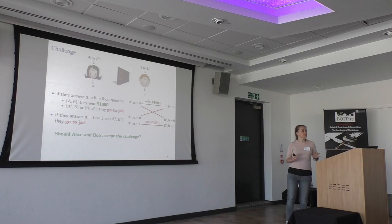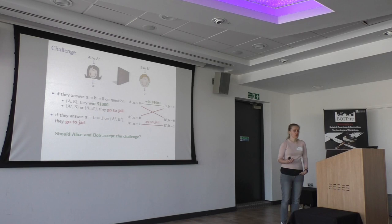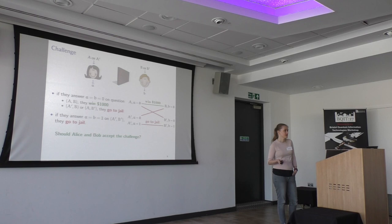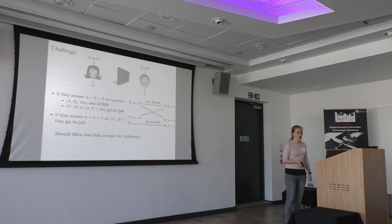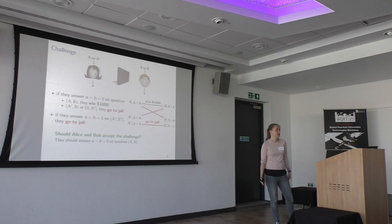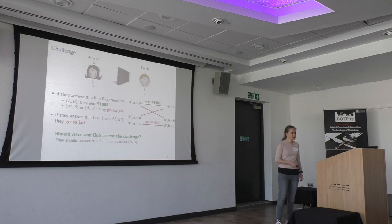Let's first look at the case where Alice and Bob are classical — no quantum entanglement. Suppose there is some good strategy, meaning there is a non-zero chance to win the prize but zero chance of going to jail. It's not too hard to see that if there is a good strategy, you can make it deterministic, so Alice and Bob's answers only depend on which question they get — A or B. If they want to win, then when we ask them questions A and B, Alice and Bob both have to say zero, because that's the only way they can win the prize.